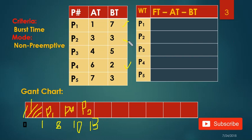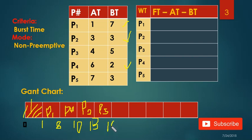P2 is also done. Now from P3 and P5, I'm going to check which one has the least burst time — P5 has the least burst time, so I'm going to put P5 here. The burst time for P5 is 3, so 13 plus 3 is 16.